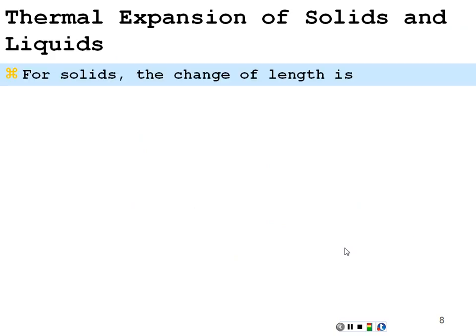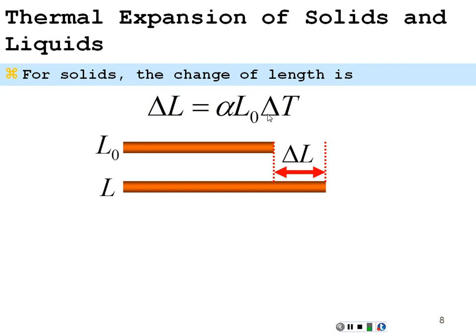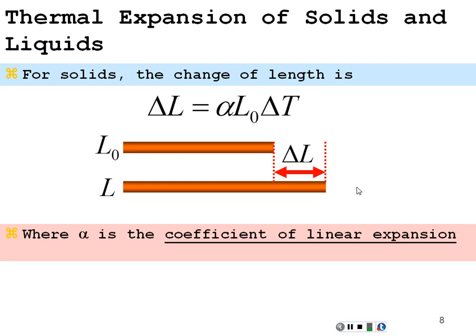Thermal expansion of solids and liquids. For solids, the change in length of a one-dimensional solid is proportional to its original length and proportional to the change in temperature. That proportionality constant is alpha. Alpha is the coefficient of linear expansion — it's an intrinsic value of whatever material you're using, whether it be copper, steel, or aluminum. They're going to have different linear expansion coefficients.